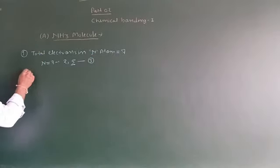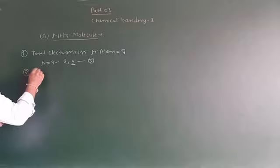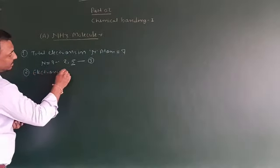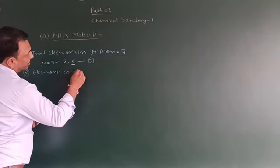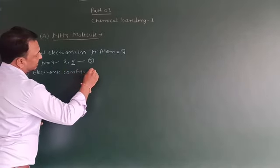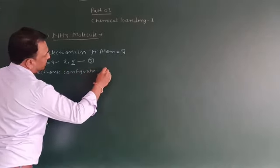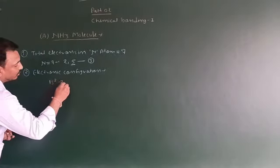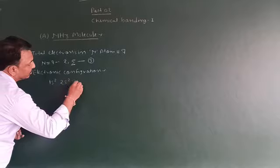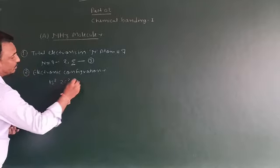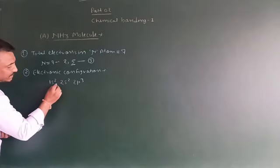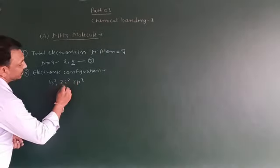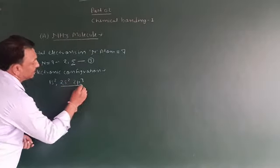Second point: electronic configuration of nitrogen। Configuration रहेगी: 1s2, 2s2, 2p3। Principal number change होने पर comma आएगा। Outermost orbitals कौन से हैं: 2s2 और 2p3।